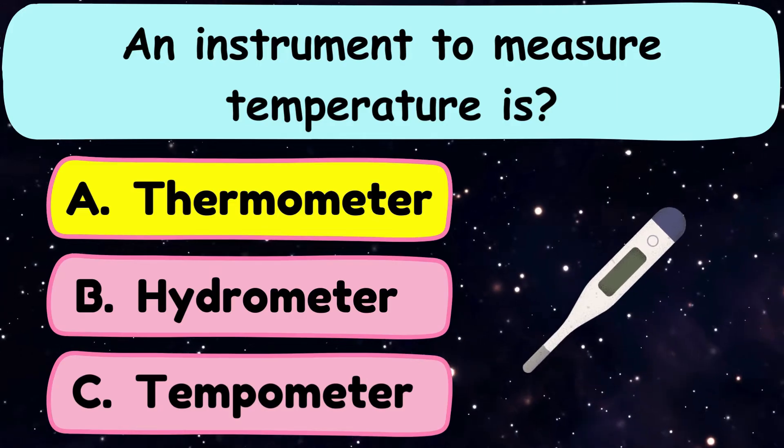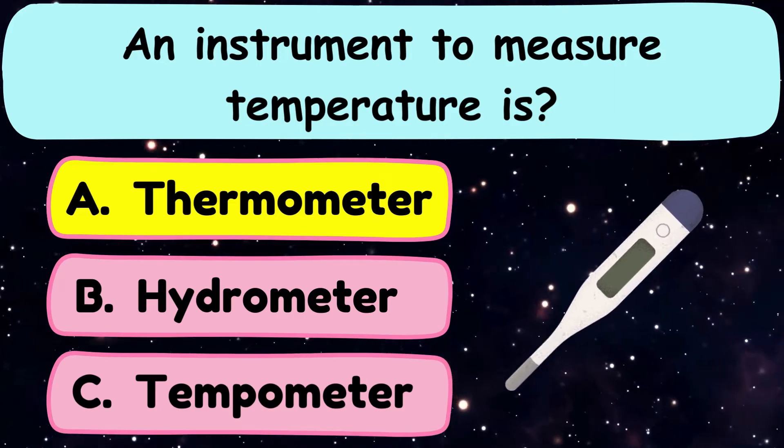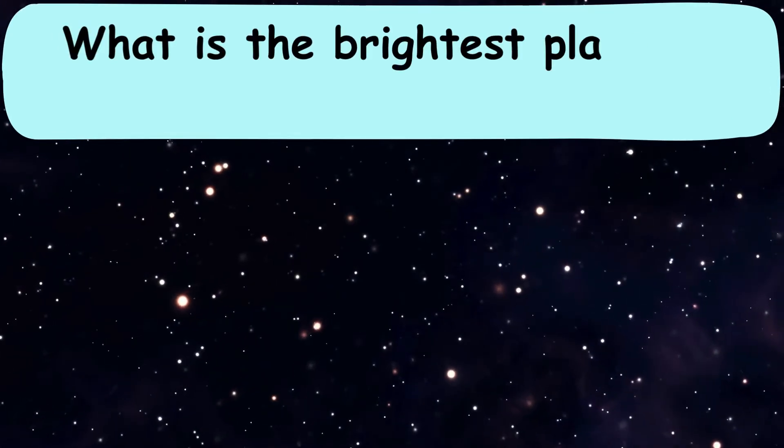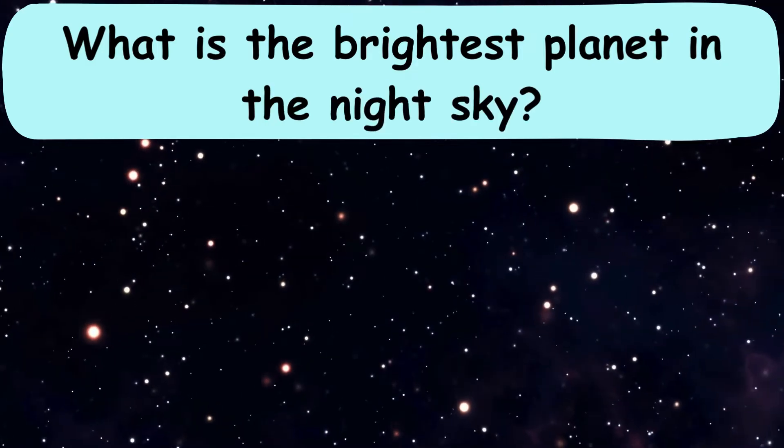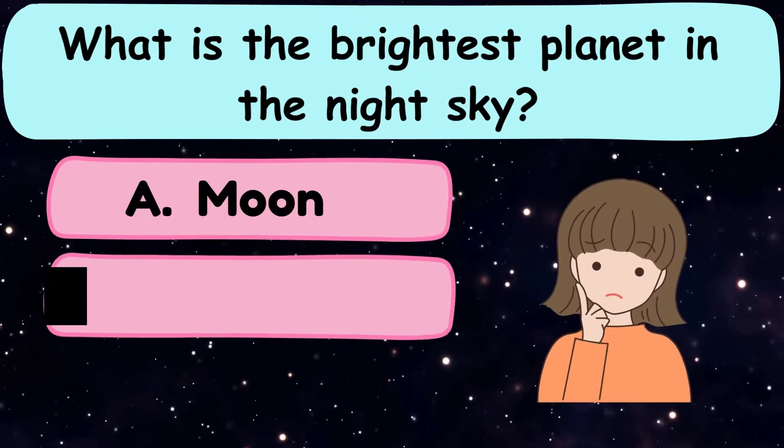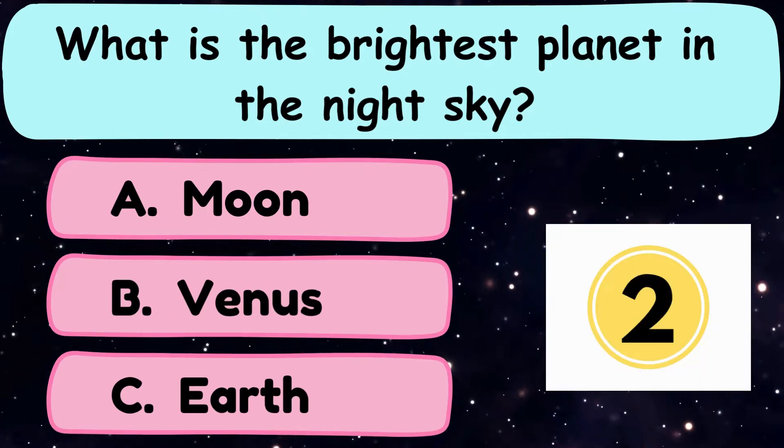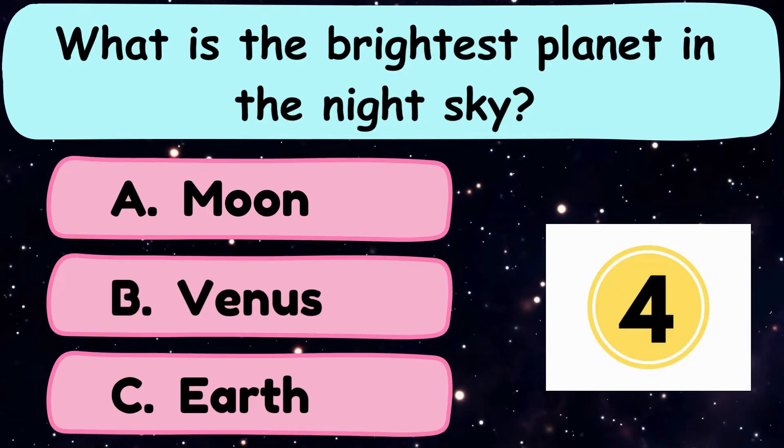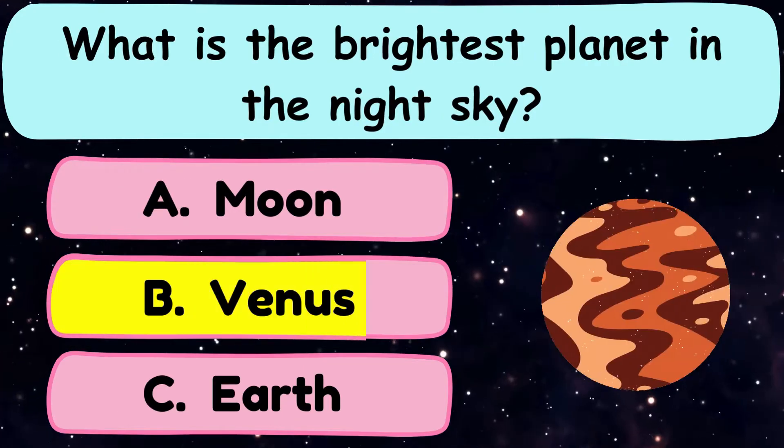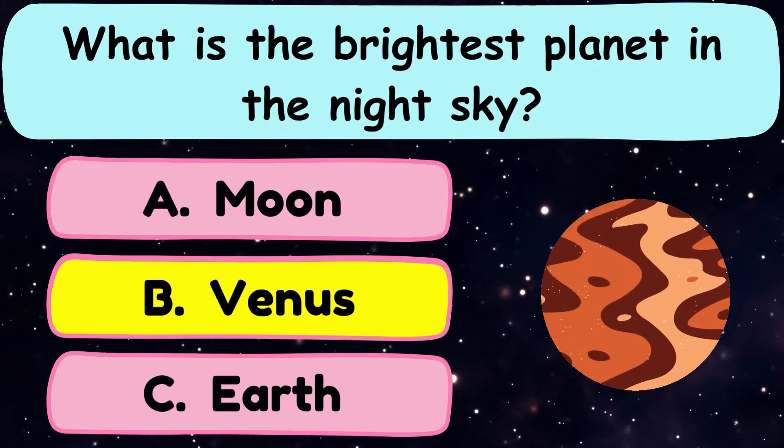Question number 7. What is the brightest planet in the night sky? A. Moon, B. Venus, or C. Earth? Yes, the correct answer is option B. Venus.